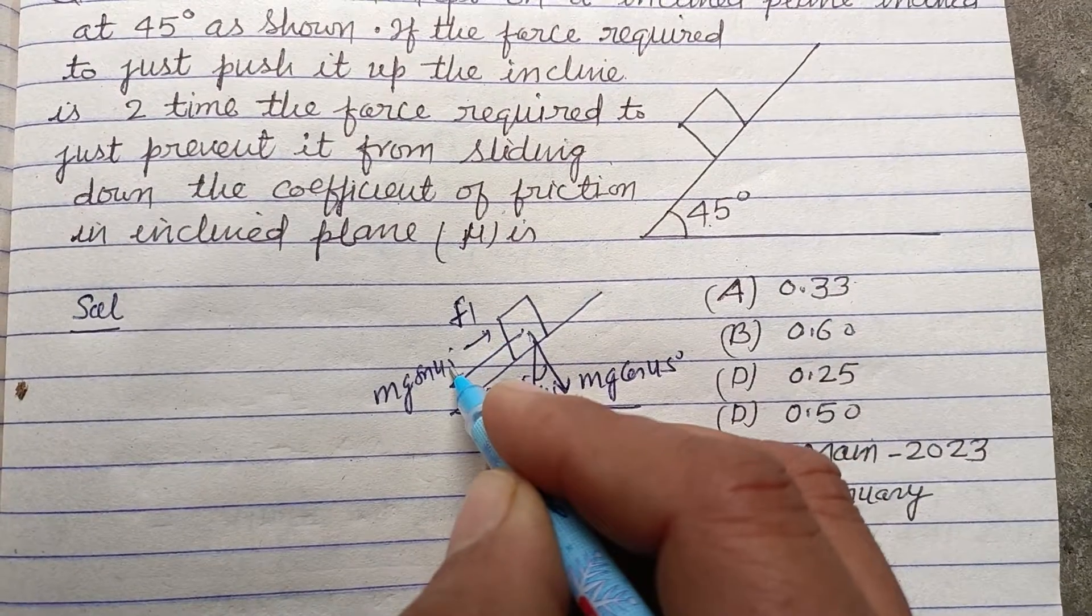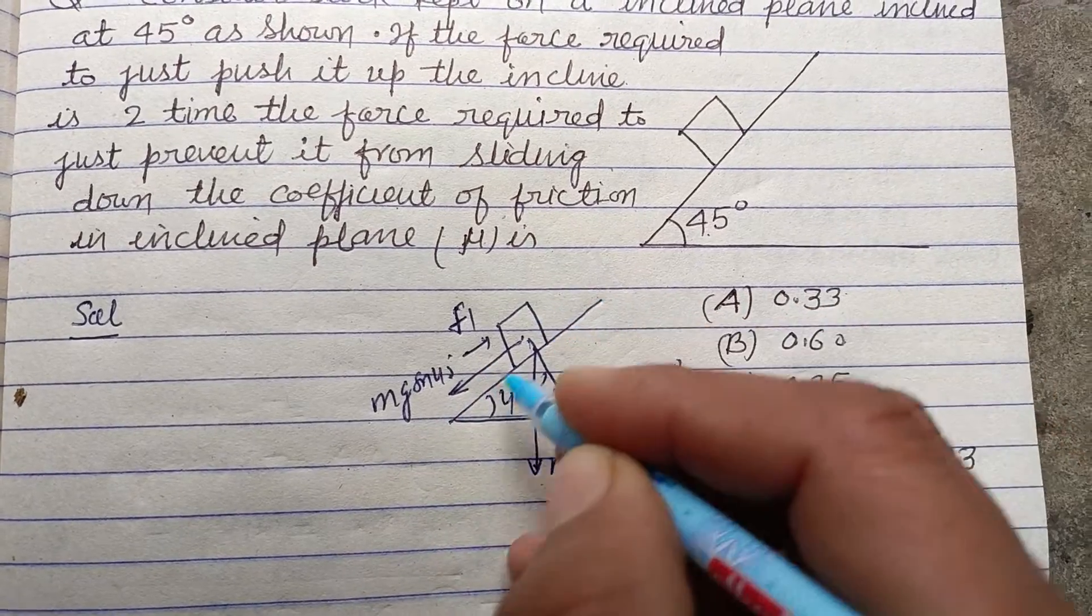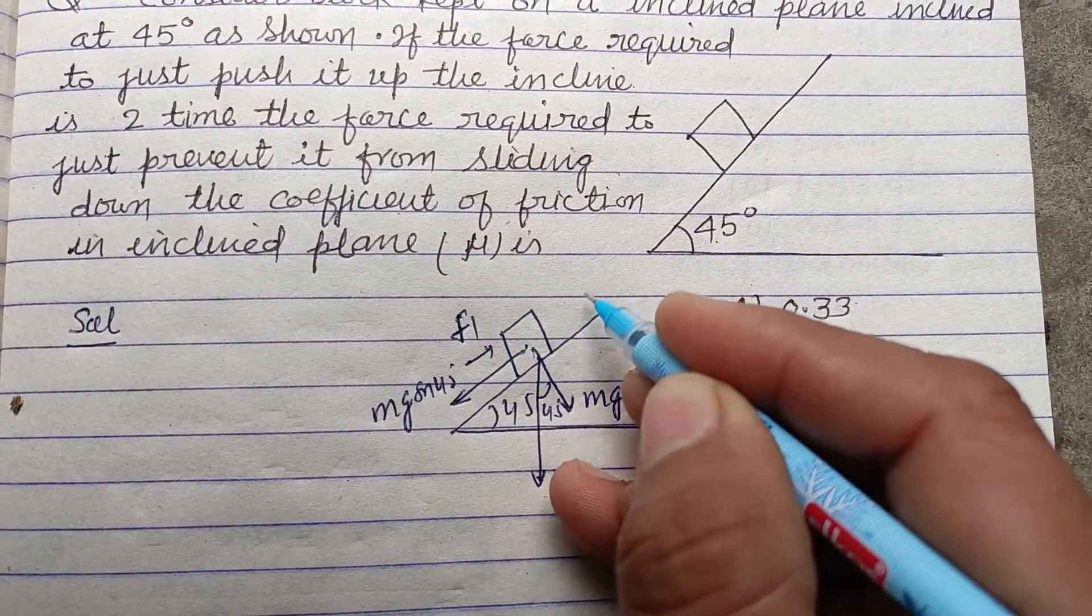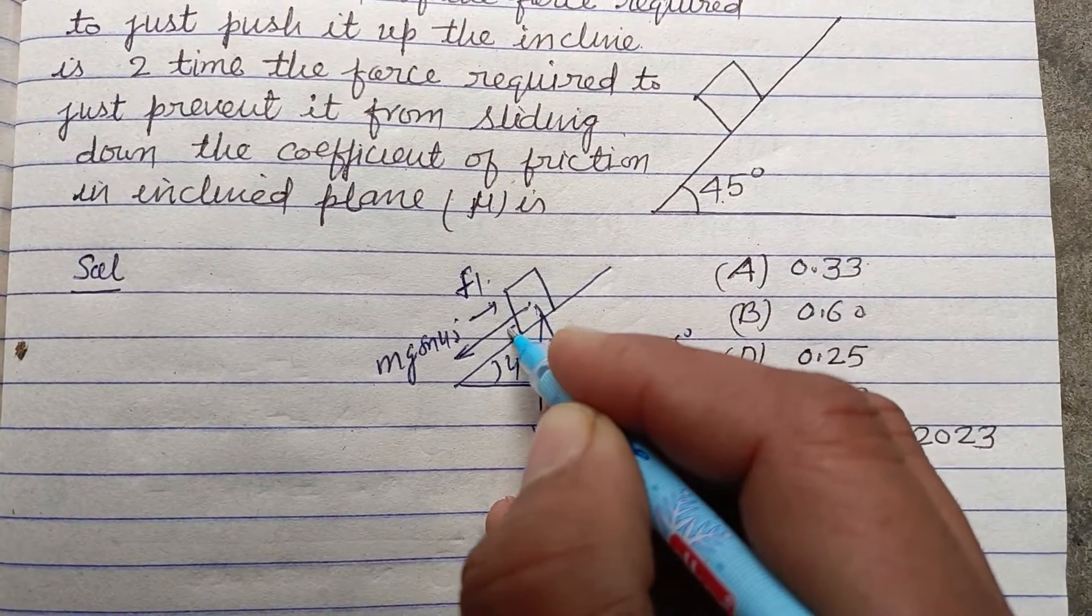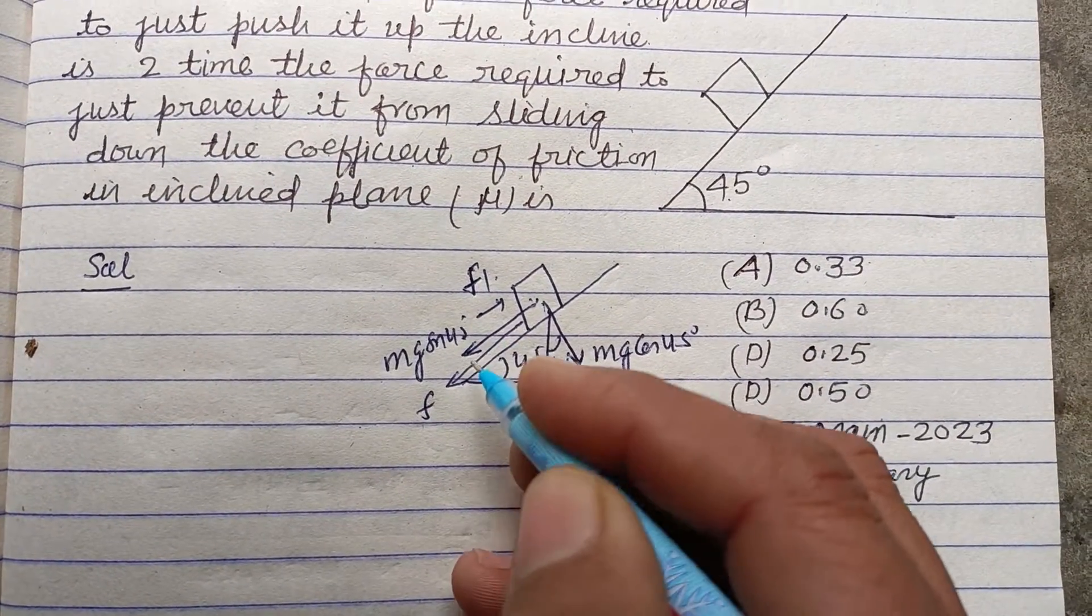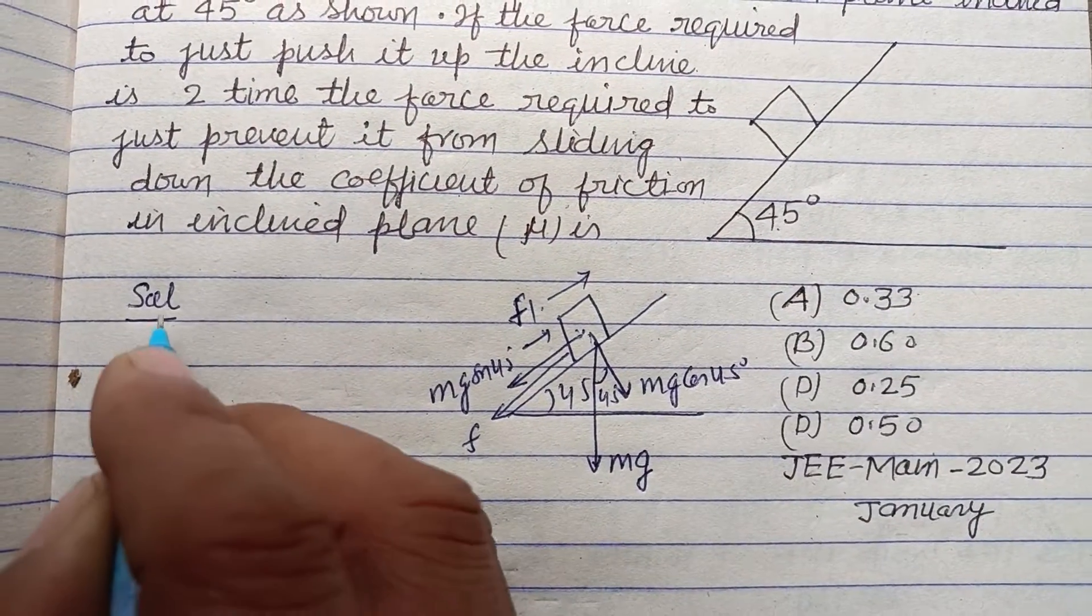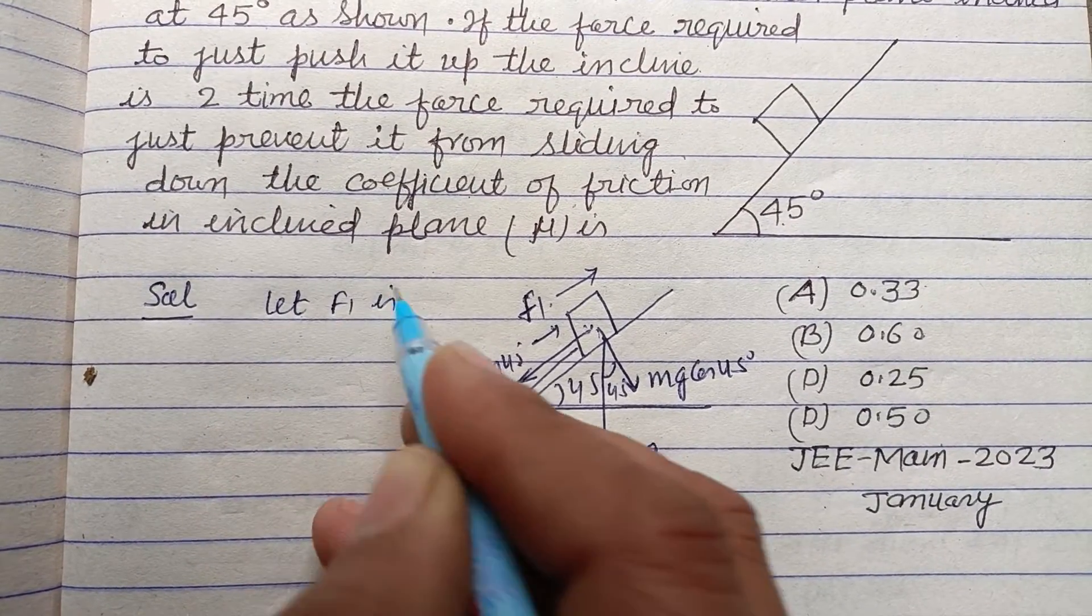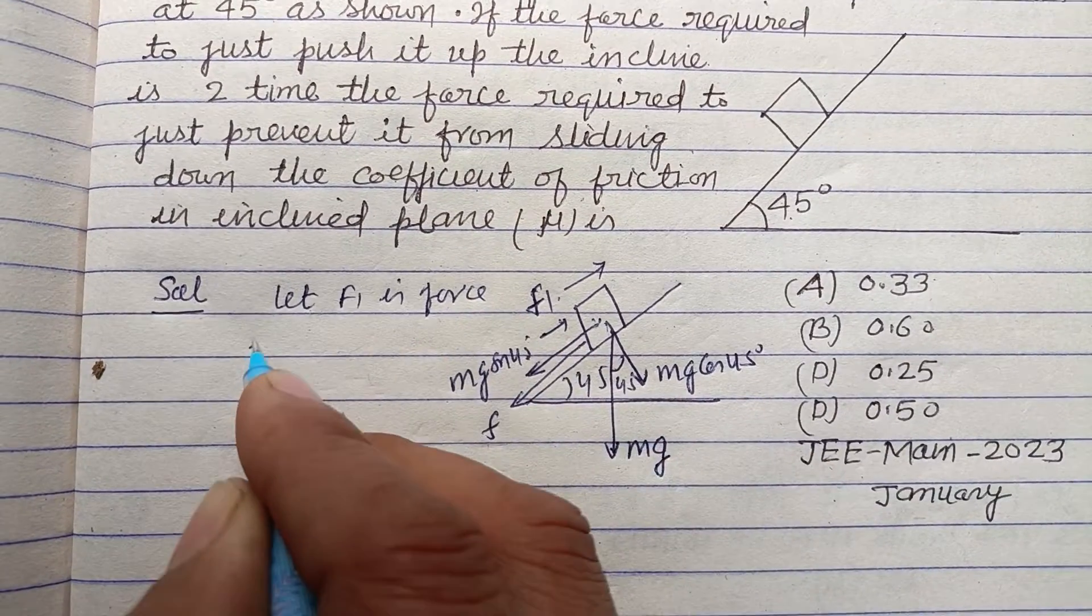So Mg sin 45 wants to bring it towards the downward direction. If we want to push it in upward direction, then we require force F1. Then its friction force acts in downward direction because we want to move it in upward direction.